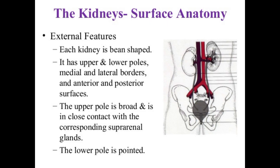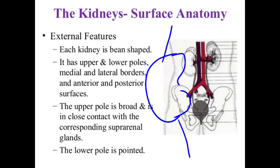Looking at the external features of the kidney: the kidneys are bean-shaped. The kidney has two poles — upper pole and lower pole — a medial border, a lateral border, an anterior surface, and a posterior surface.